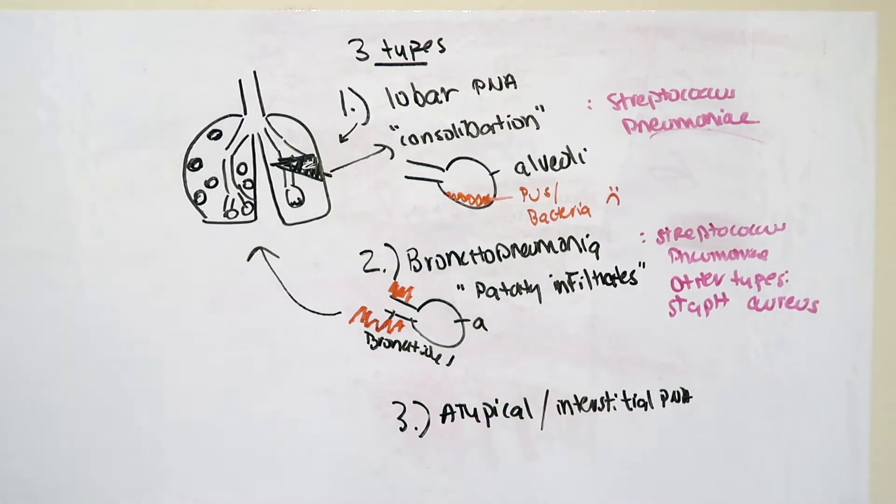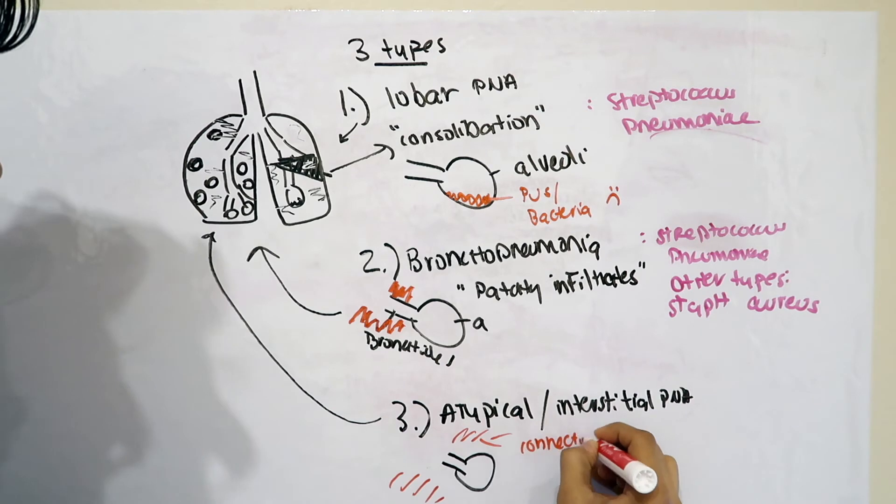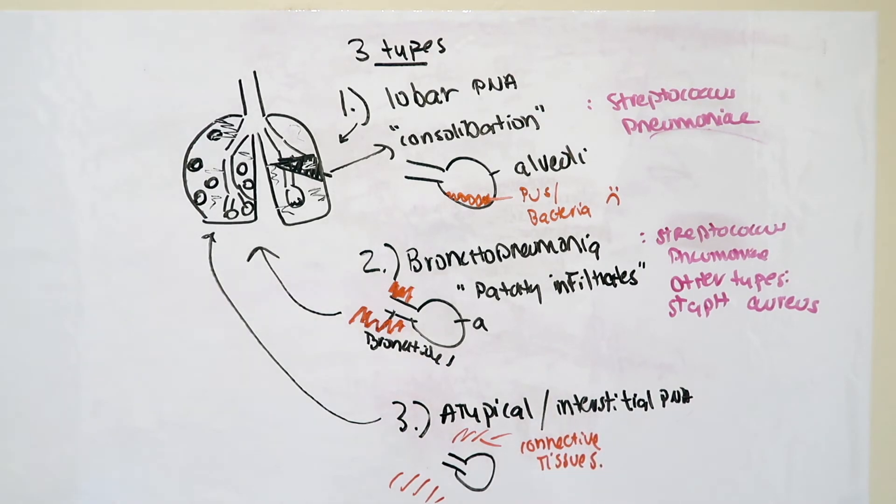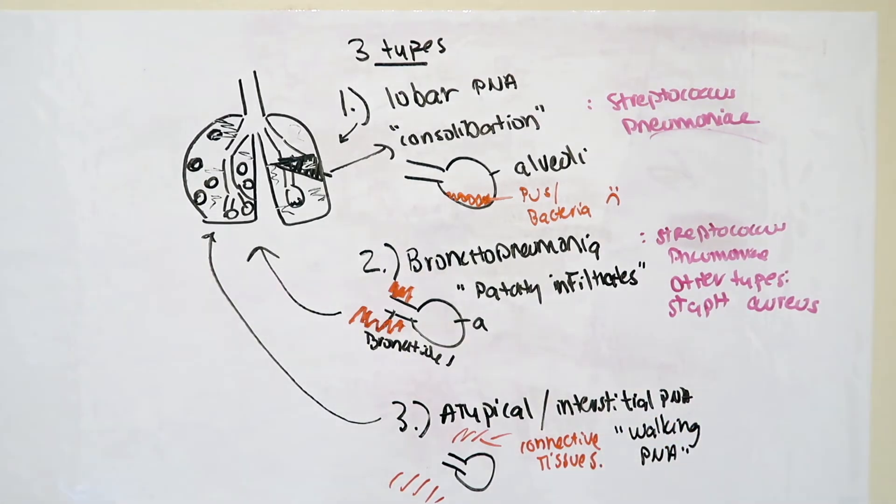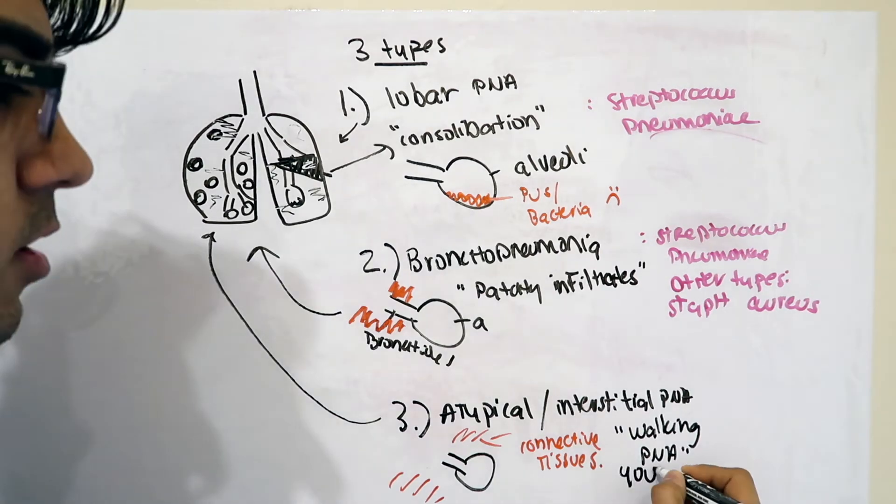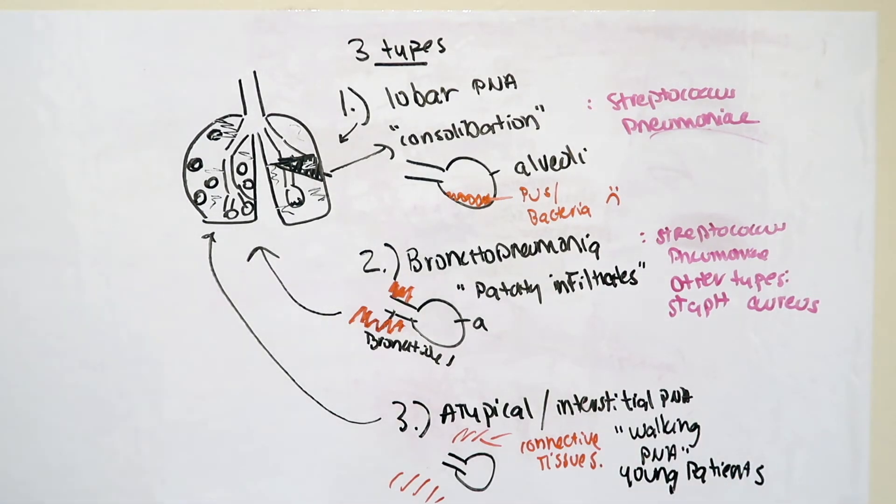The third pattern of pneumonia is called atypical or interstitial pneumonia. If we were to draw out our alveoli again, this type of infection would affect the interstitial or the connective tissue within the lungs supporting the alveoli and the bronchioles. This type of infection is also called a walking pneumonia because the symptoms are not as bad, and sometimes the patients who have this type of pneumonia are essentially walking around, carrying on their daily lives. This type of infection may also very commonly affect young patients.